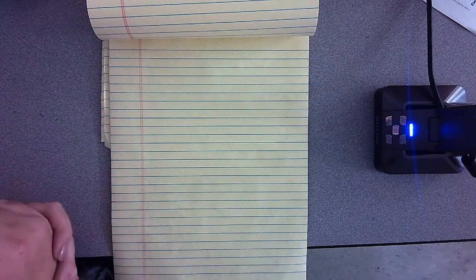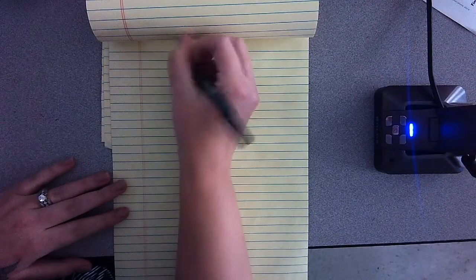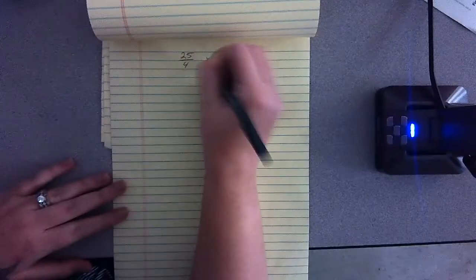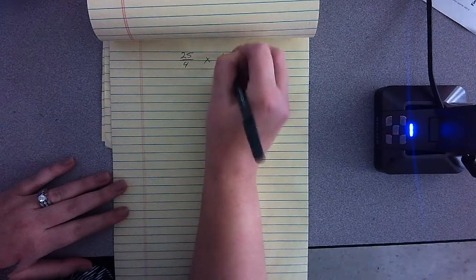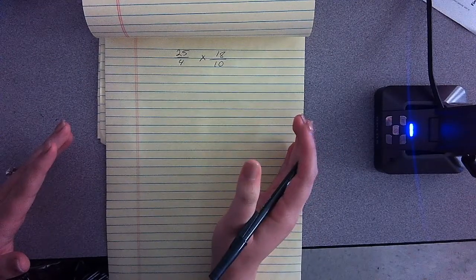So what I'll start with is students have been learning two strategies. So say for example, we have the problem 25 over 4 multiplied by 18 over 10. We can do it one of two ways.